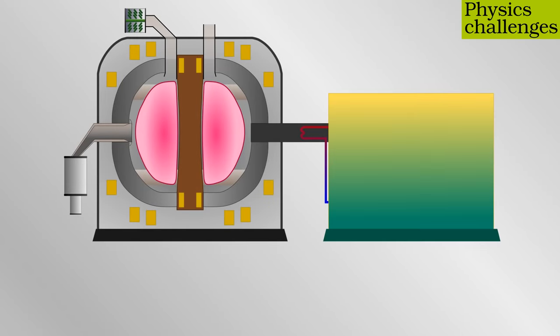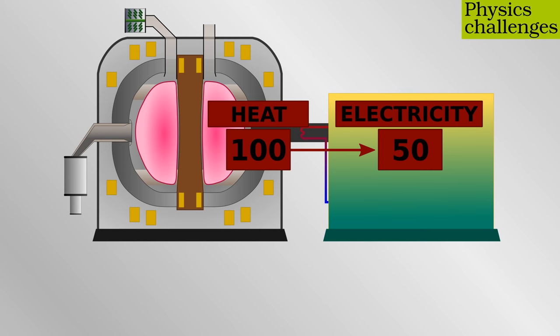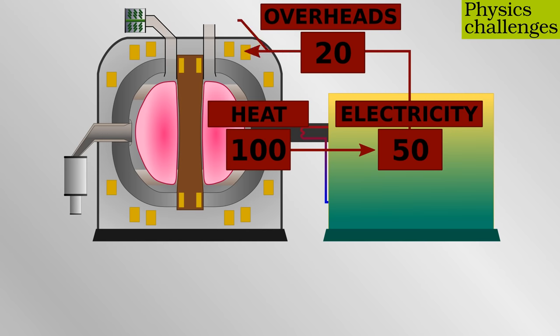I will use an example of a spherical tokamak, which is the configuration of two of the bold claims I mentioned earlier. Suppose we capture 100 units of fusion energy from our reactor as heat. Those pesky thermodynamics from before mean I'd be lucky to turn this into 50 units of electrical energy. 20 units go to the overheads, the magnetic coils, pumps, control systems. The other 30 are used for heating and current drive in the plasma.